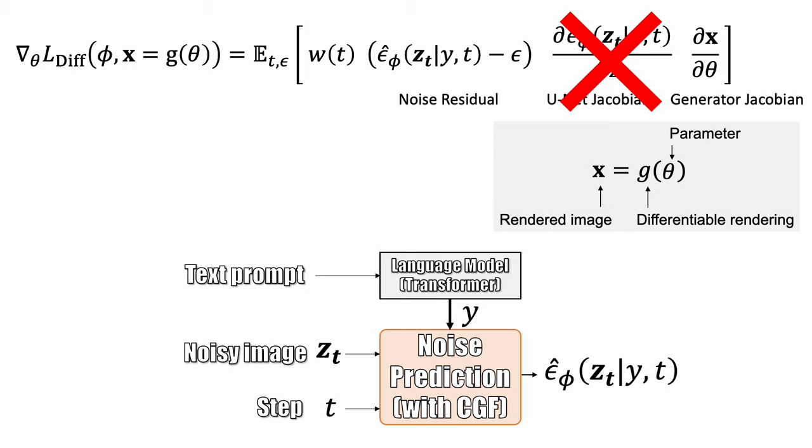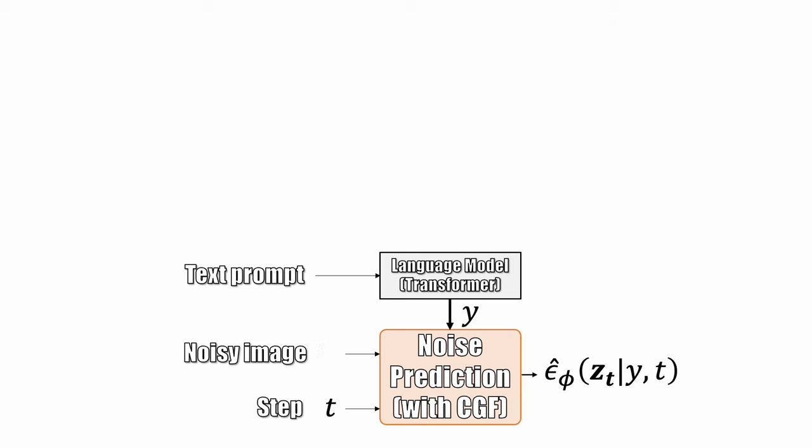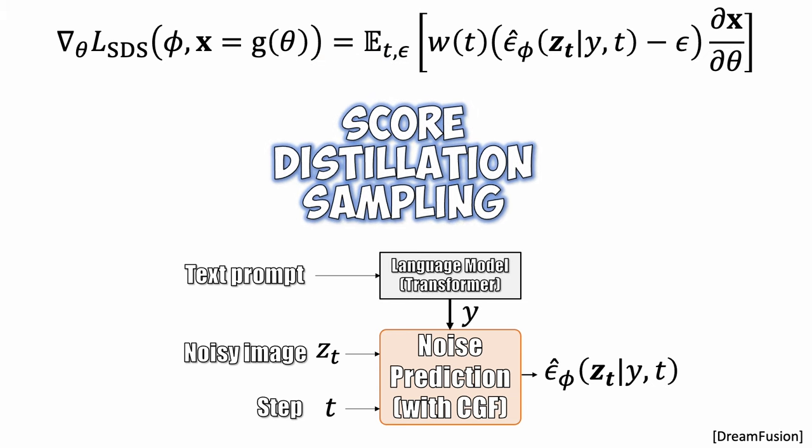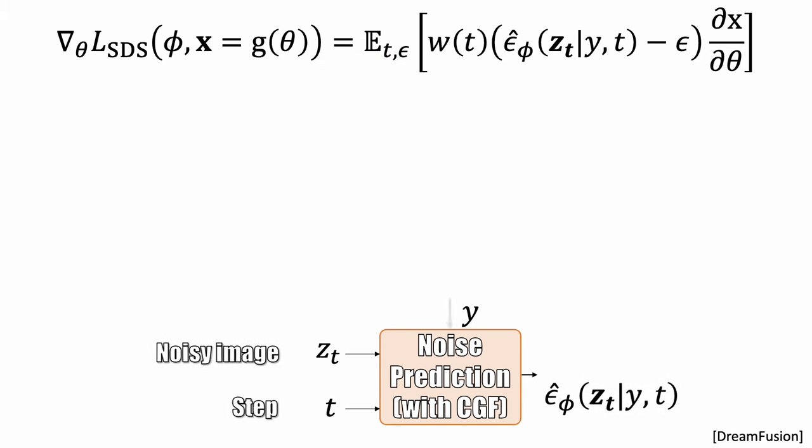The DreamFusion paper shows that removing the UNet Jacobian makes the optimization more efficient and works better. This leads to a simple update direction based on a pre-trained 2D diffusion model. This is known as score distillation sampling.